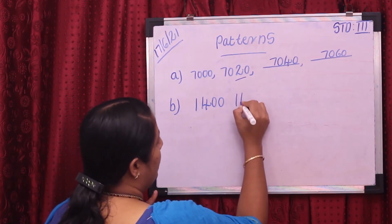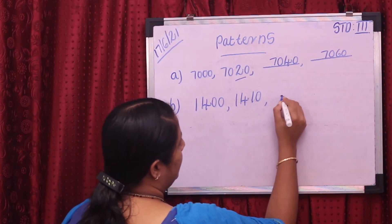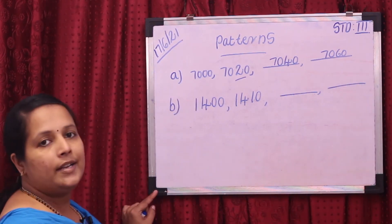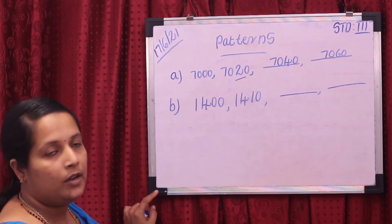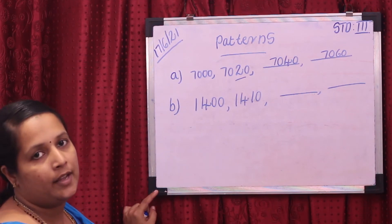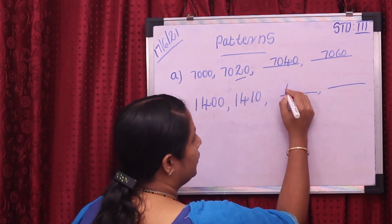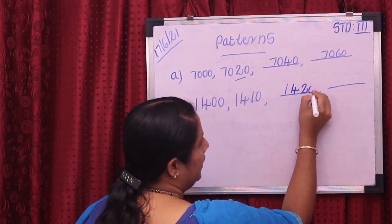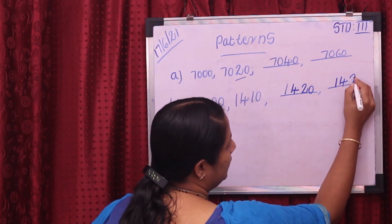The next is 1,410. We want to fill up the next patterns. First is 1,400, the next number is 1,410. The difference is 10. So the next pattern number is 1,420, then next is 1,430.